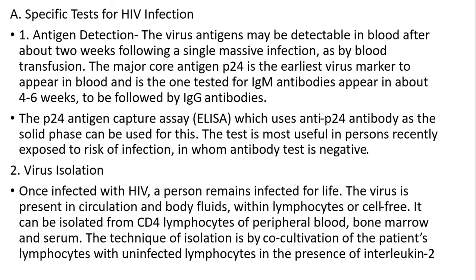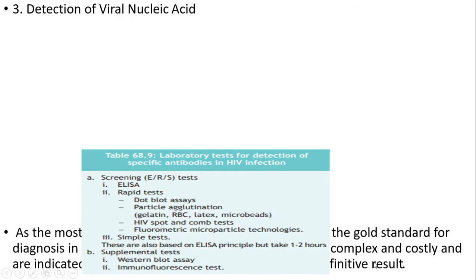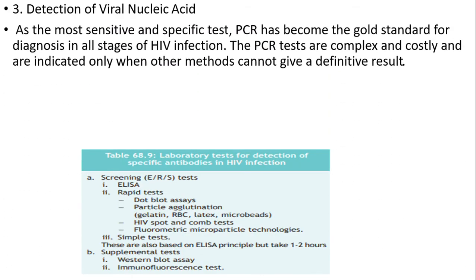Second is viral isolation: once infected with HIV, a person remains infected for life. The virus is present in circulation and body fluids within lymphocytes or cell-free. It can be isolated from CD4 lymphocytes of peripheral blood, bone marrow, and serum. The technique of isolation involves co-cultivation of patient lymphocytes with uninfected lymphocytes in the presence of interleukin-2. Detection of viral nucleic acid by PCR is the most sensitive and specific test and has become the gold standard for diagnosis of all stages of HIV infection.